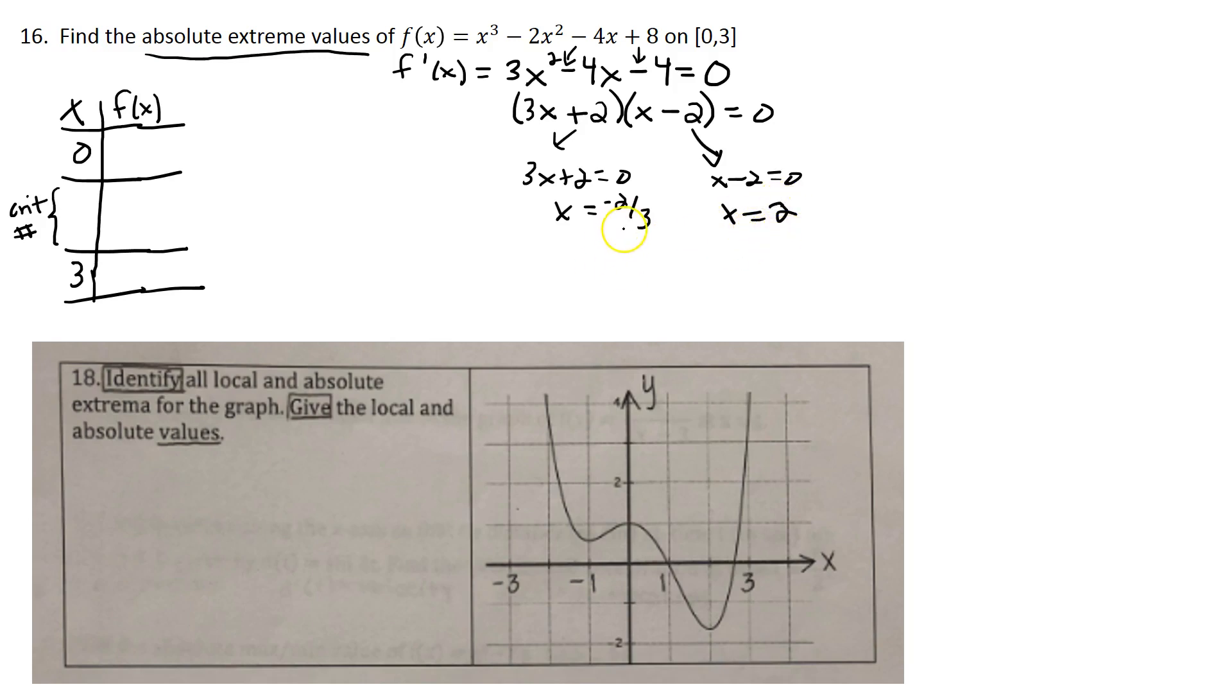One of these we care about, one of these we don't. Negative 2 thirds is not in our interval 0 to 3, we don't care about it. So we don't use it at all, we just throw it out. But 2 is an element of our interval, and so 2 goes on the list. It's going to make it into the party, it's on the list.